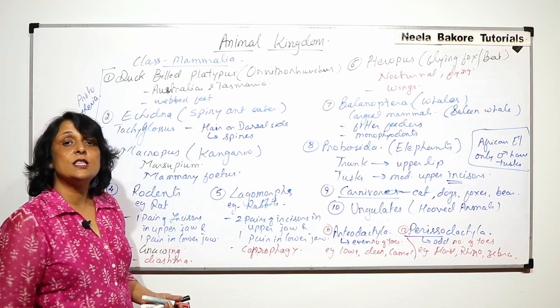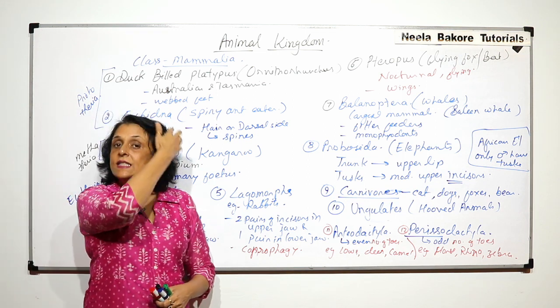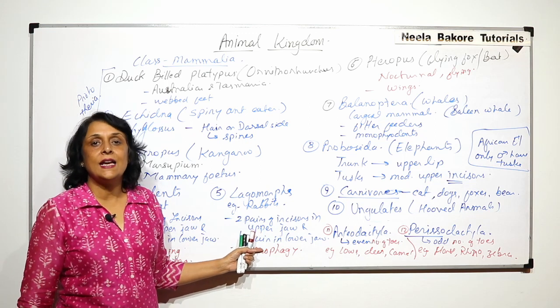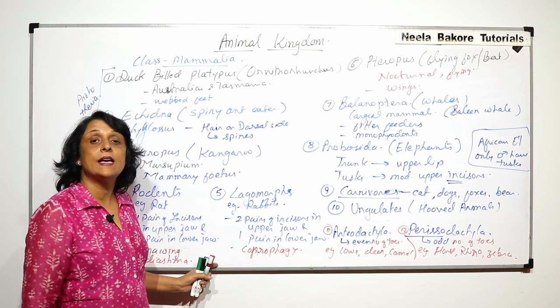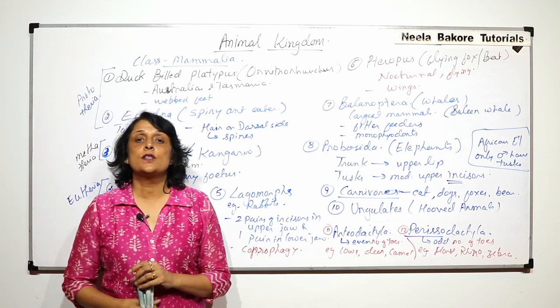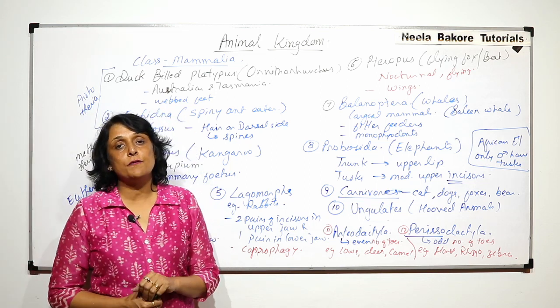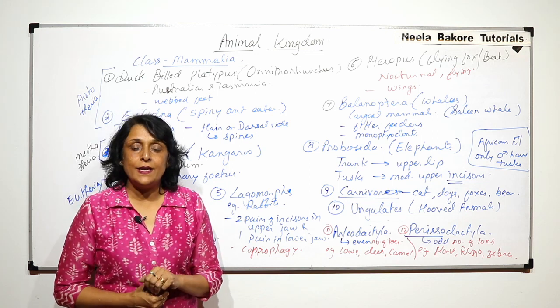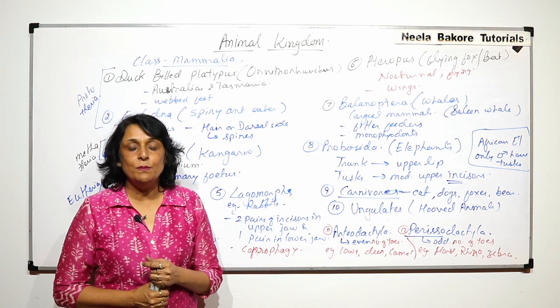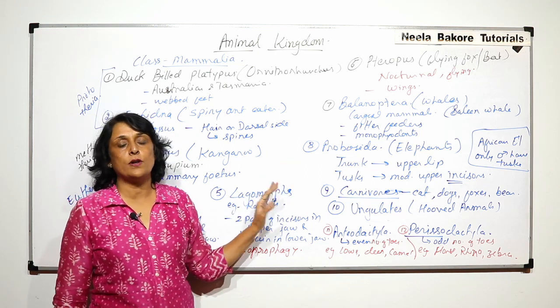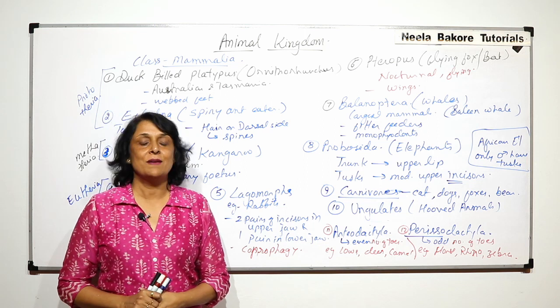Diastema is a space between incisors and premolars, the space where normally canines are present. So if canines are absent, there is a gap there. So we have discussed all the characteristic features of every class and all the phylums in kingdom Animalia. This was the last one. We have taken all important examples of class Mammalia.